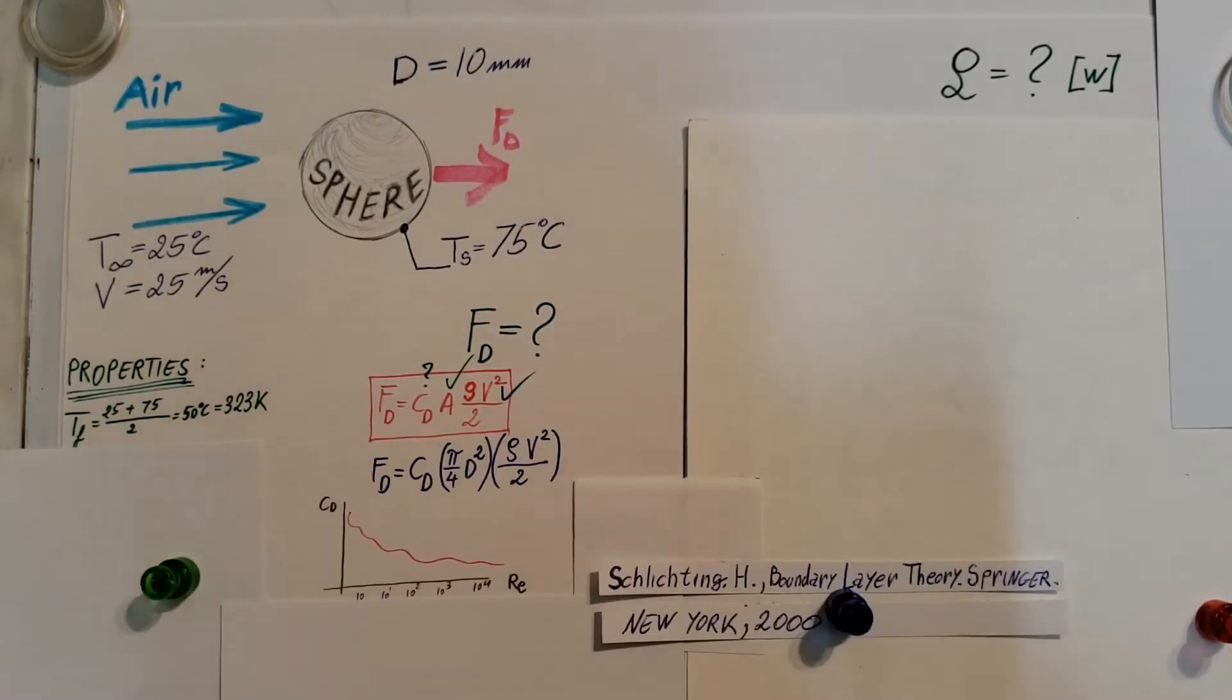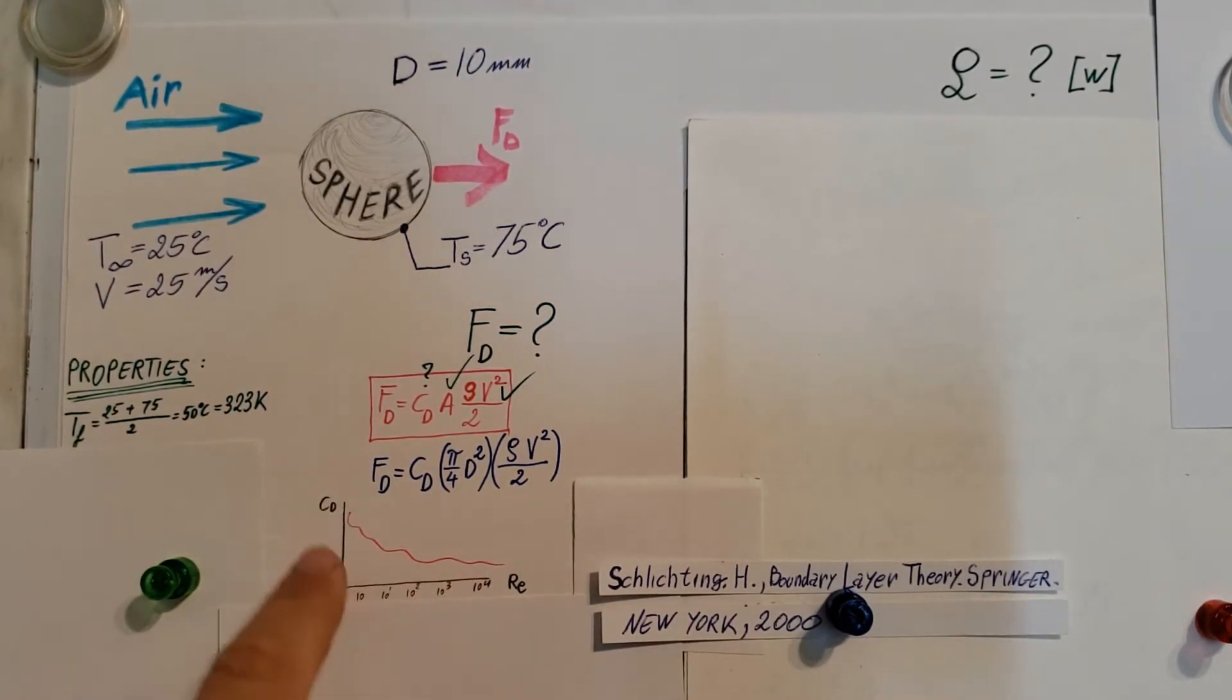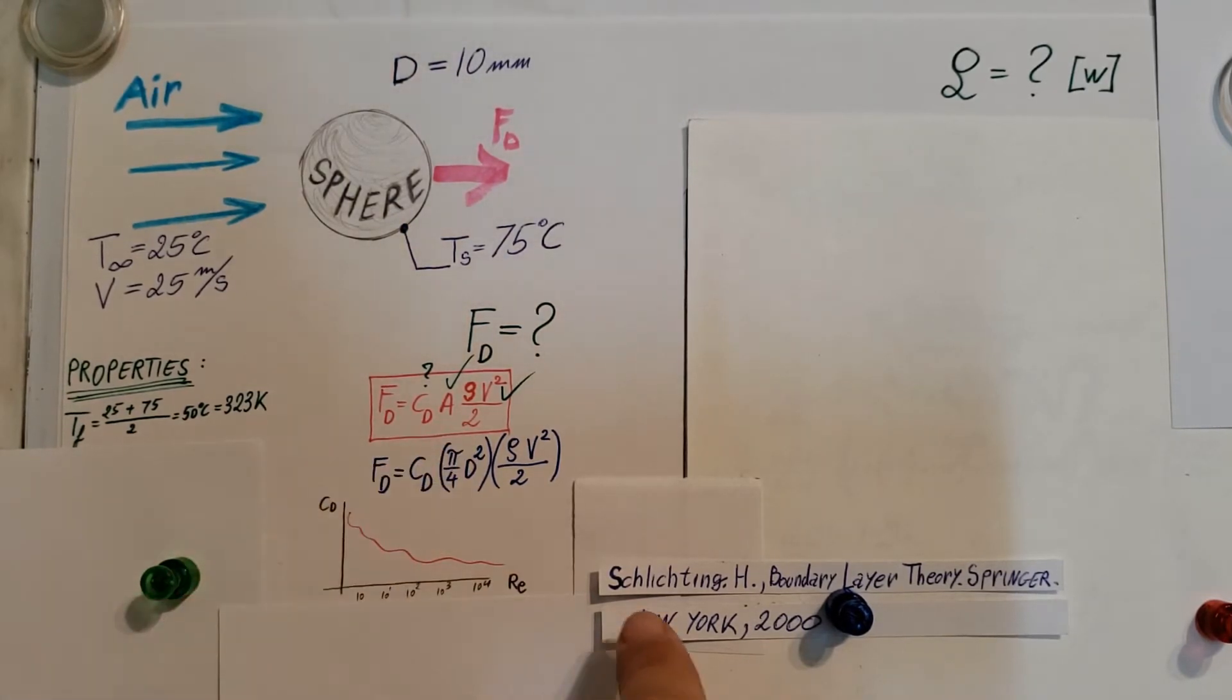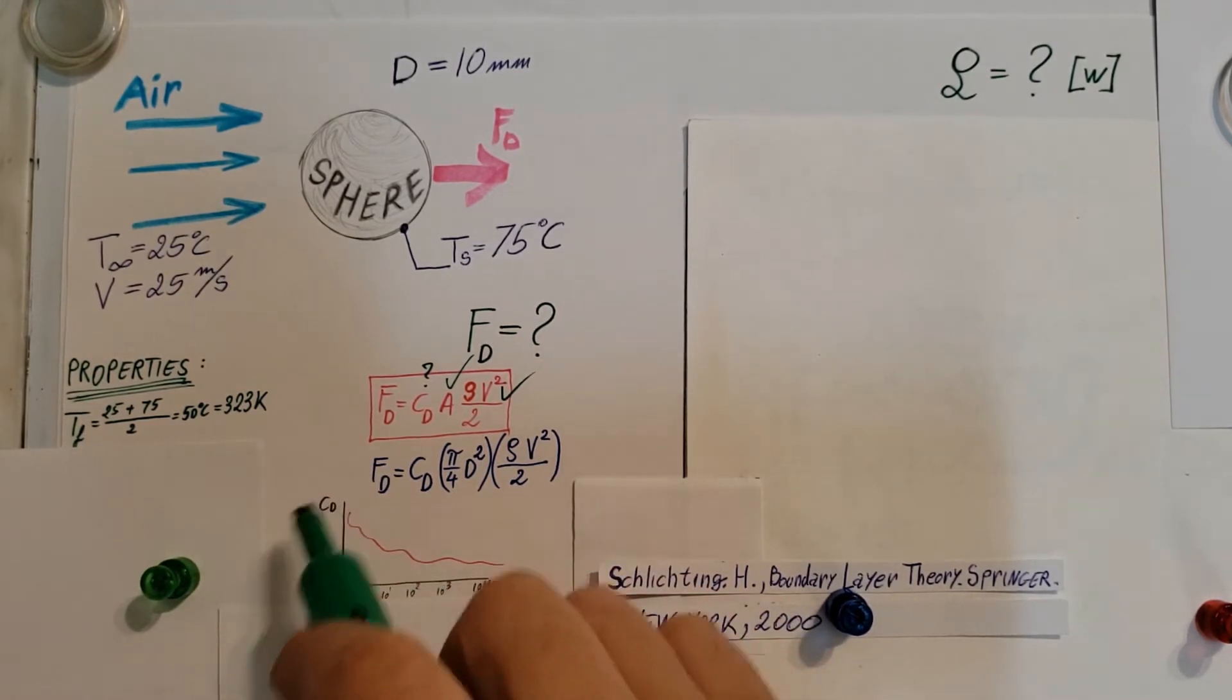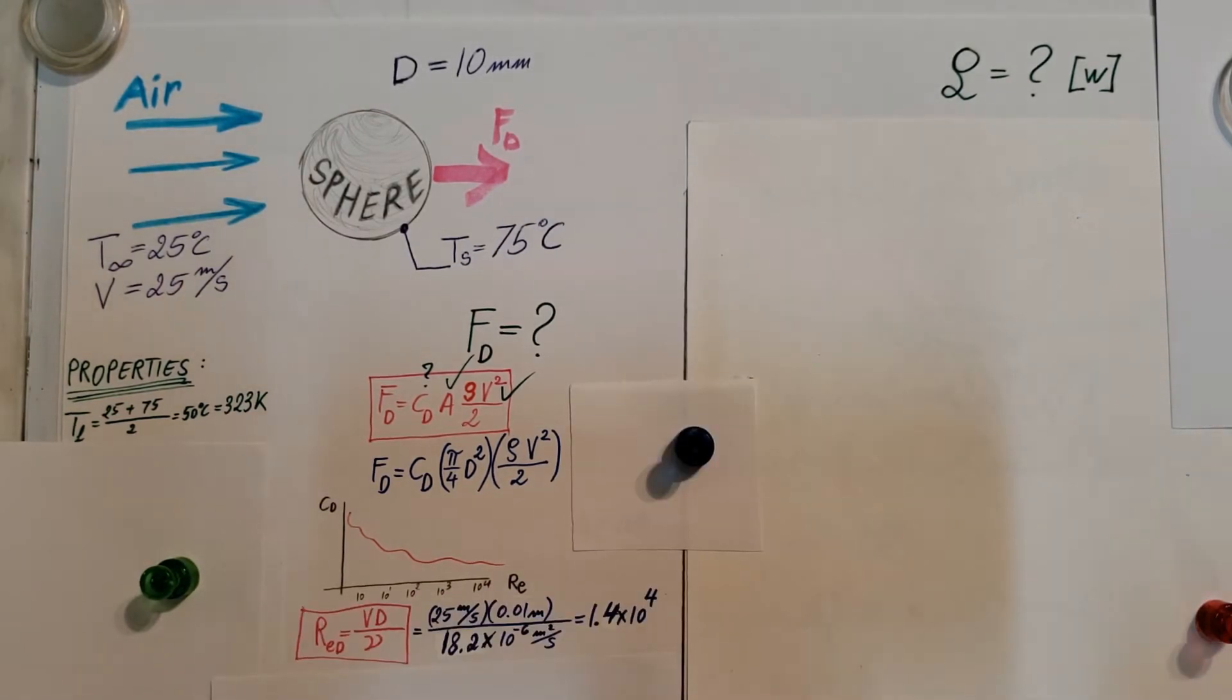Before we go to the property tables, let's look at what else we're going to need. Our drag coefficient. To find this guy, our drag coefficient, we rely on this chart and this can be found in our textbook or if not at this reference right here. So we need to find our Reynolds number in order to be able to use this chart and then find our drag coefficient.